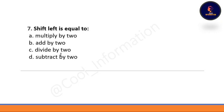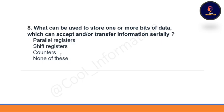Question 7: Shift left is equal to — option A: multiply by 2, option B: add by 2, option C: divide by 2, option D: subtract by 2. The correct option is A, which is multiply by 2.